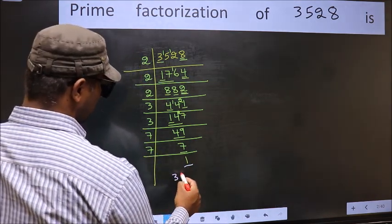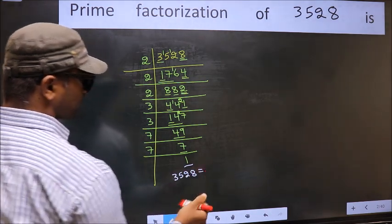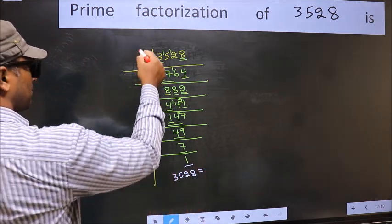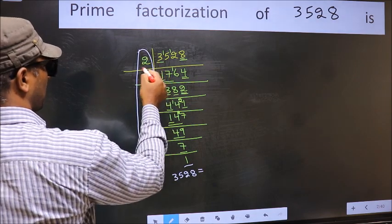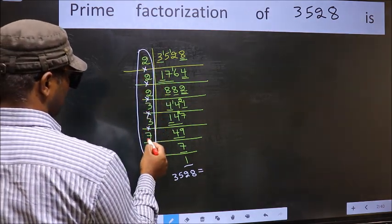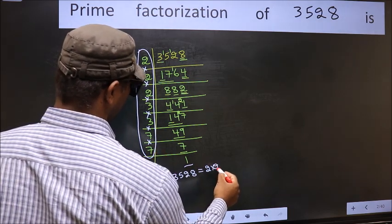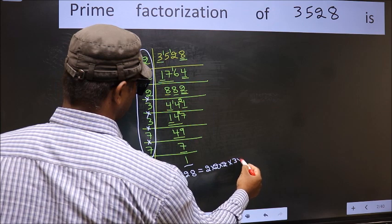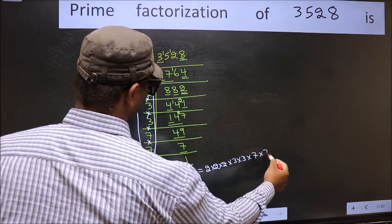So the prime factorization of 3528 is the product of these numbers: 2 into 2 into 2 into 3 into 3 into 3 into 7 into 7.